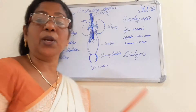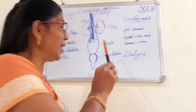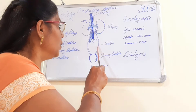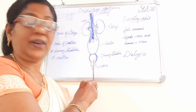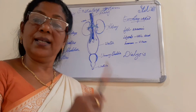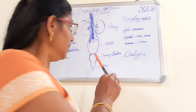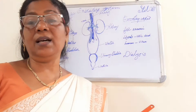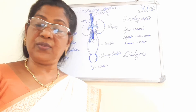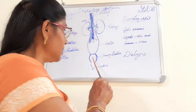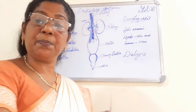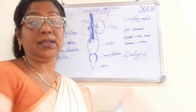The waste materials produced in the kidneys are known as urine, and this urine is collected by the ureters and finally reaches the urinary bladder where it is stored. When the urinary bladder is half full or more, the person feels the urge for urination, and the urine will be expelled out through the urethra.